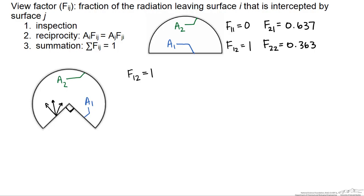Another way to look at it is to look at F one one. Those arrows indicate the radiation that's leaving from the surface. What you can see from that is none of the surface intercepts any of the radiation. So F one one is going to be zero, and by the summation rule, F one two has to equal one.